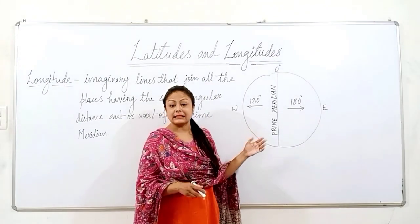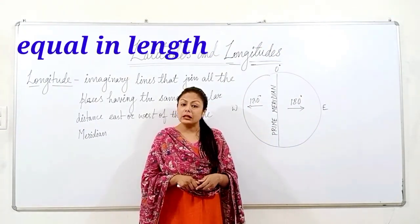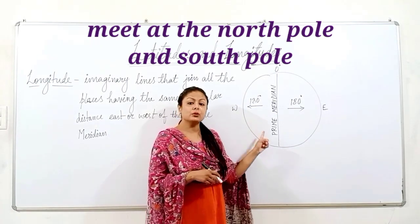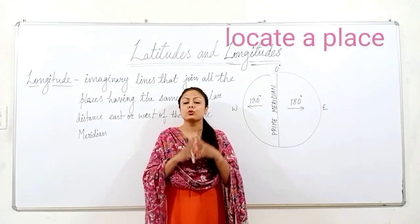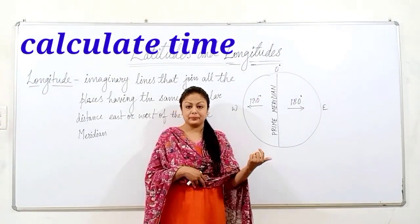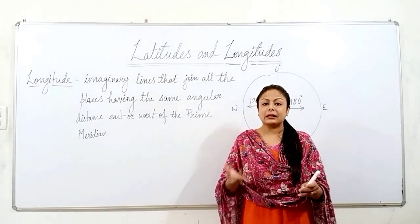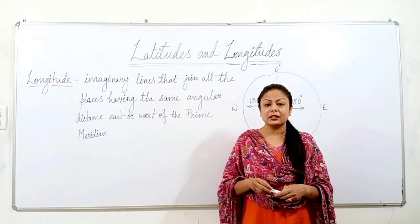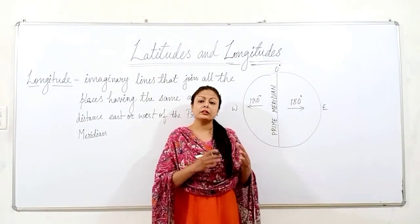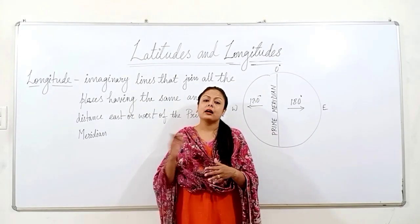So students, let's discuss the characteristics of longitudes. The prime meridian is the reference line. There are 360 longitudes. All the longitudes are equal in length and they meet at the north pole and south pole. Longitudes along with latitudes, when they intersect each other, help to locate a place on the earth. Longitude also helps us to calculate time — we will learn further in this chapter how the longitudes help us to calculate time as the earth is spherical and time varies when we move from one longitude to another.